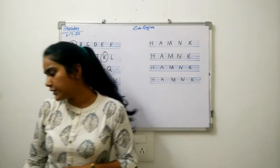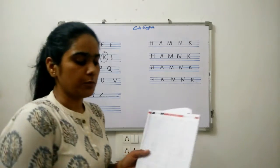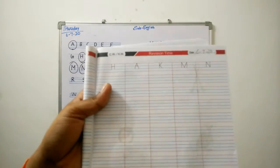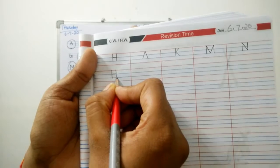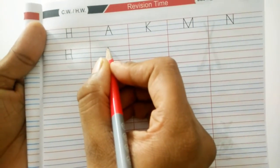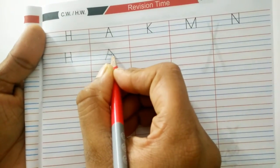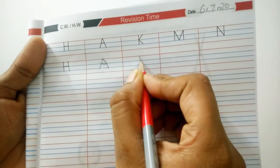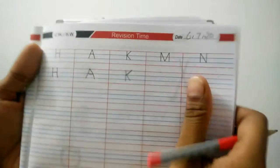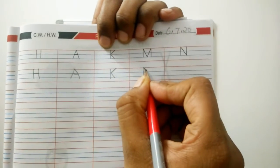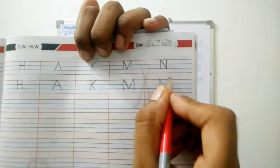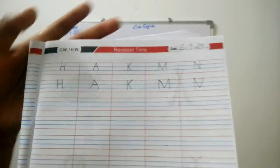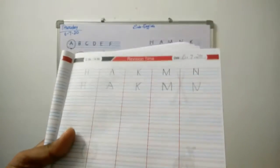Now open your English activity notebook, page number 25. Look at here: how to write H — standing line, sleeping line, standing line. How to write A — slanting line, slanting line, sleeping line. Standing line, slanting line, standing line. Complete the whole page.